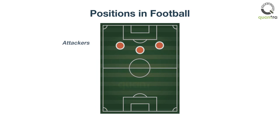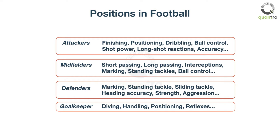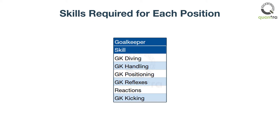As we know, in football, a player can be an attacker, defender, midfielder, or a goalkeeper. Each of these positions requires a different set of physical skills. A player is assigned a score based on his physical skills and the position he is playing in. The scores are given on a scale of 0 to 100 as shown here. For example, a goalkeeper requires skills such as diving, handling, positioning, reflexes, etc. Similarly, for other positions, skills are shown on the screen.